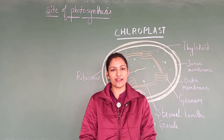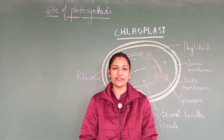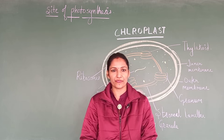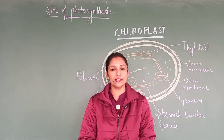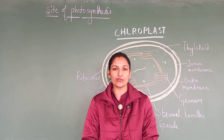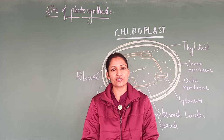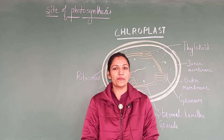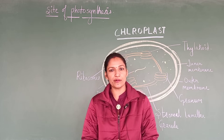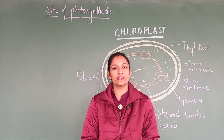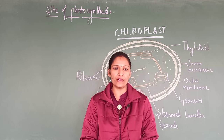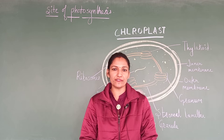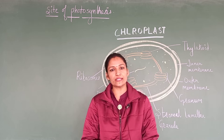Hello everyone, welcome to the class. In today's lecture, we are going to talk about the site of photosynthesis. We already know the answer to this question — where does photosynthesis take place? Surely, the leaves or the green part of the plant. Mainly, we are going to talk about the structure of the organelle chloroplast and the specific sites where the different types of reactions will take place.